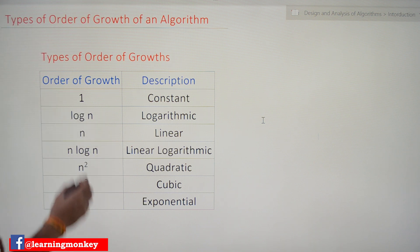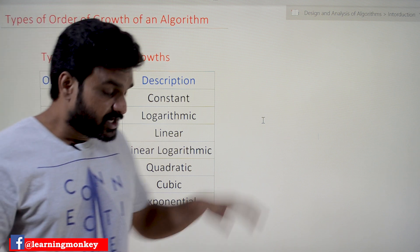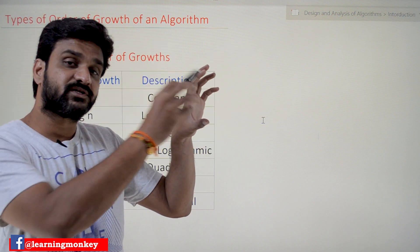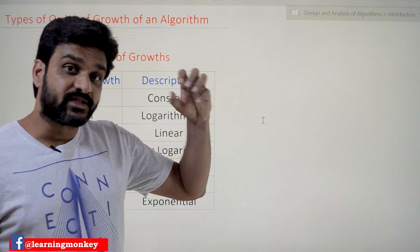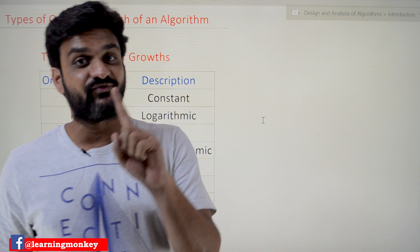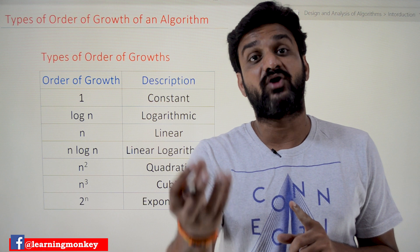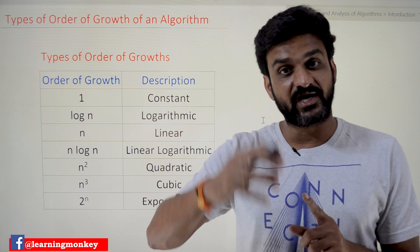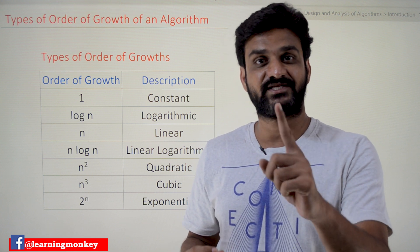The first one is order of growth of one — constant. Order of growth being one means if we have an algorithm and as the input to that algorithm changes, the number of steps executed to get the output is constant. Whatever the input, every time it is going to take a constant amount of time. For example, for 100 values, the number of steps executed is one step.